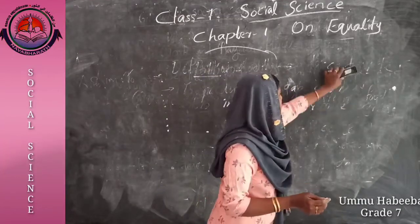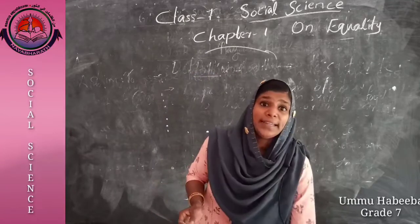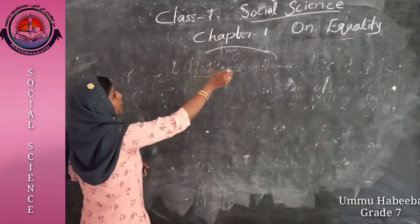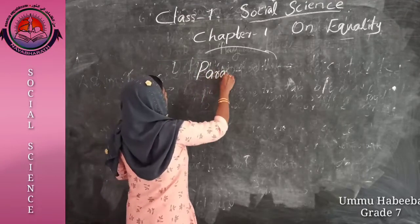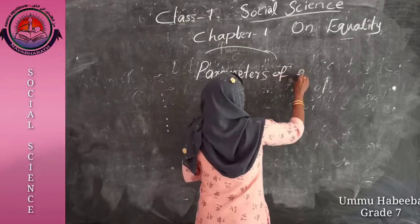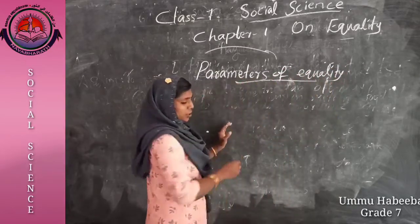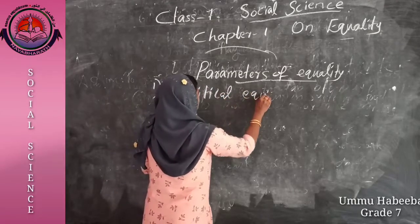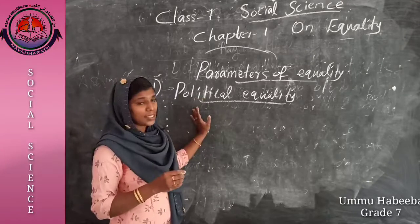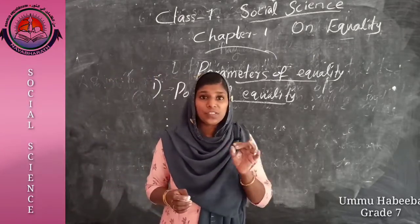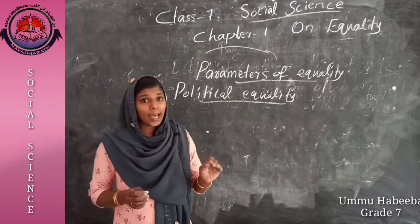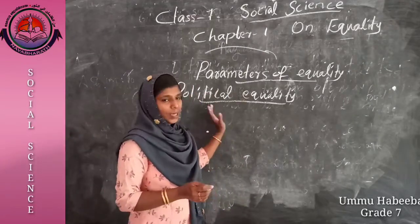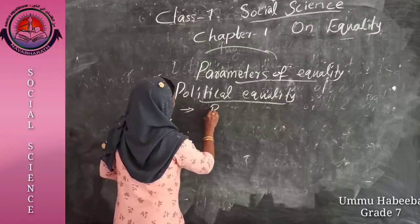There are three parameters or types of equality which exist in our society. The first one is political equality. Political equality means equal position of the people in the affairs of the state — the people have equal right to participate in the affairs of the state. This includes the right to vote and equal rights in public affairs.